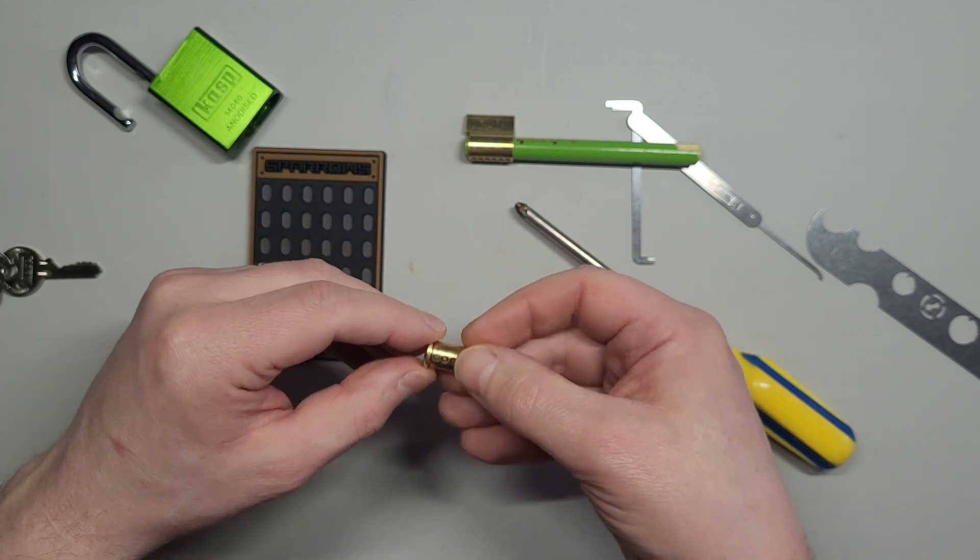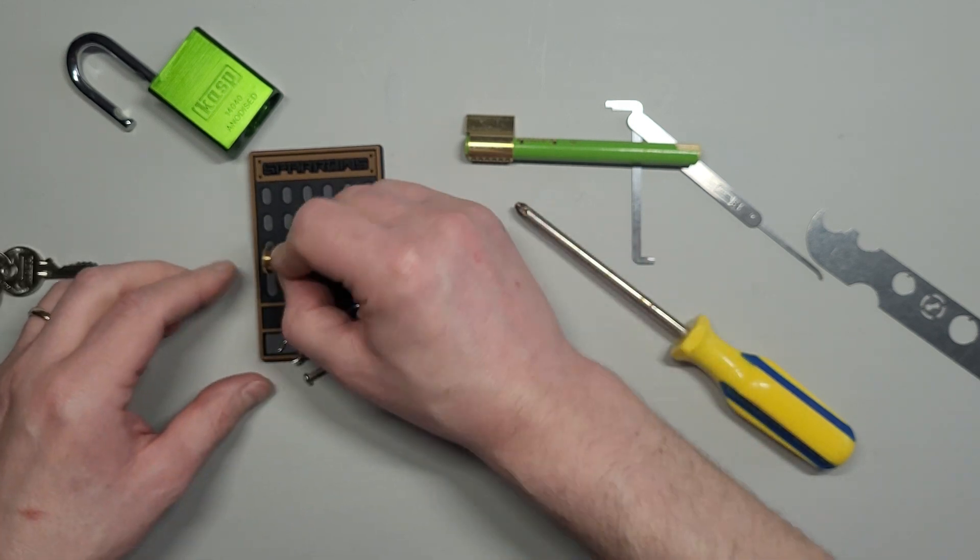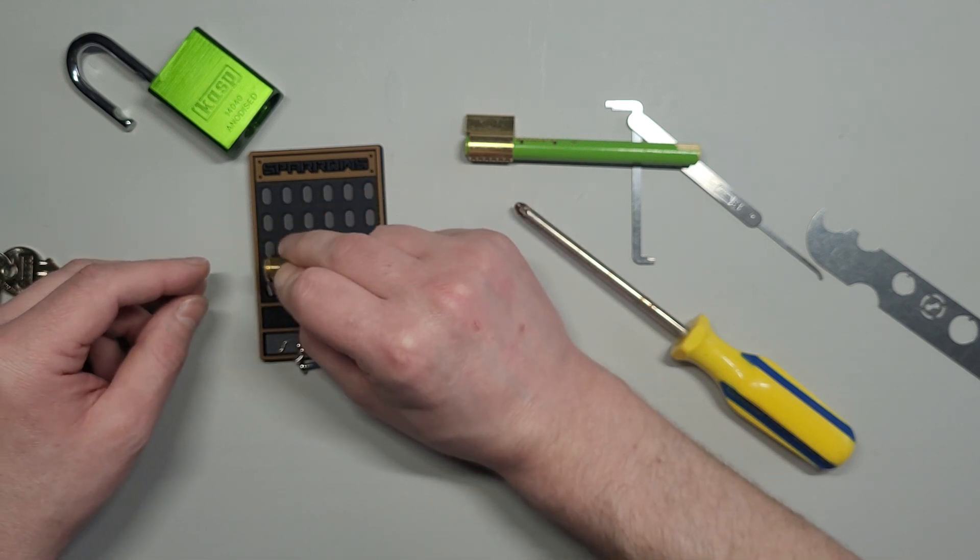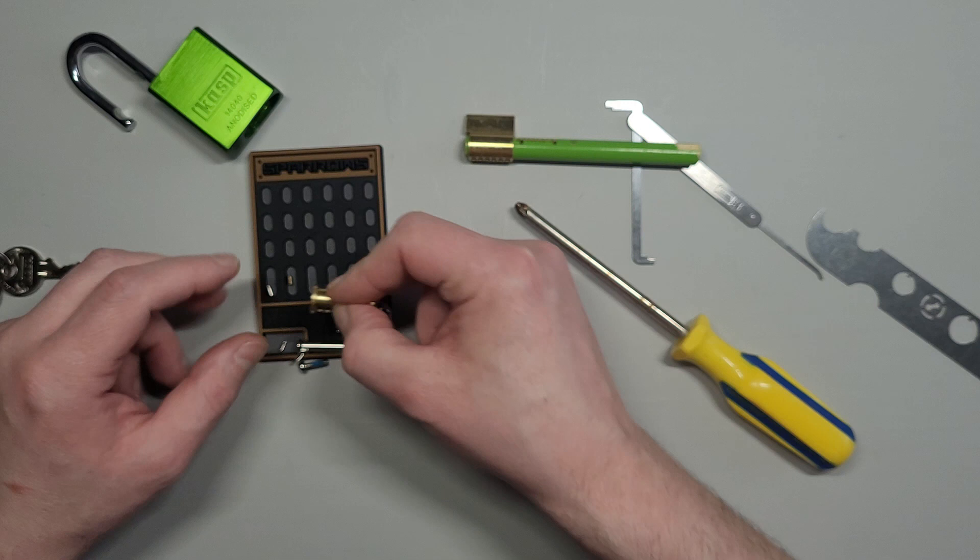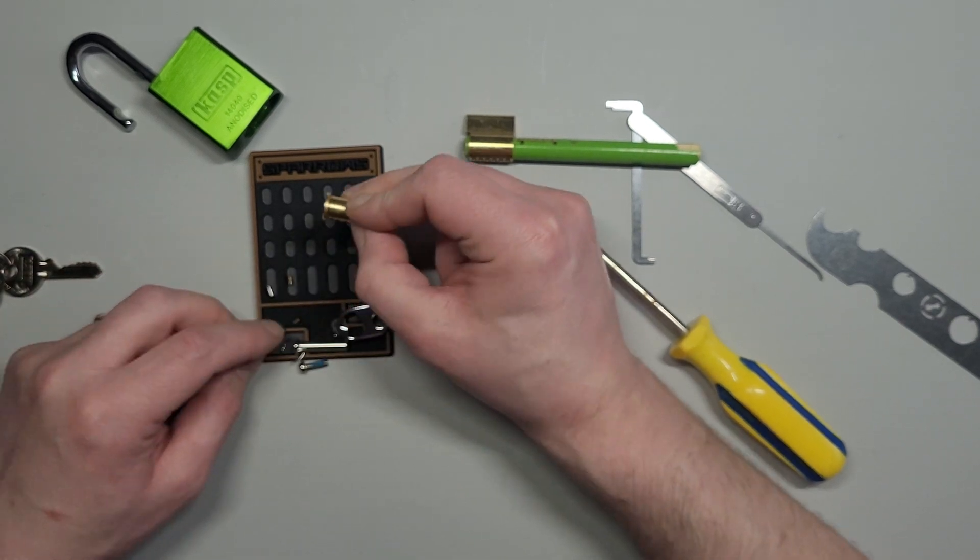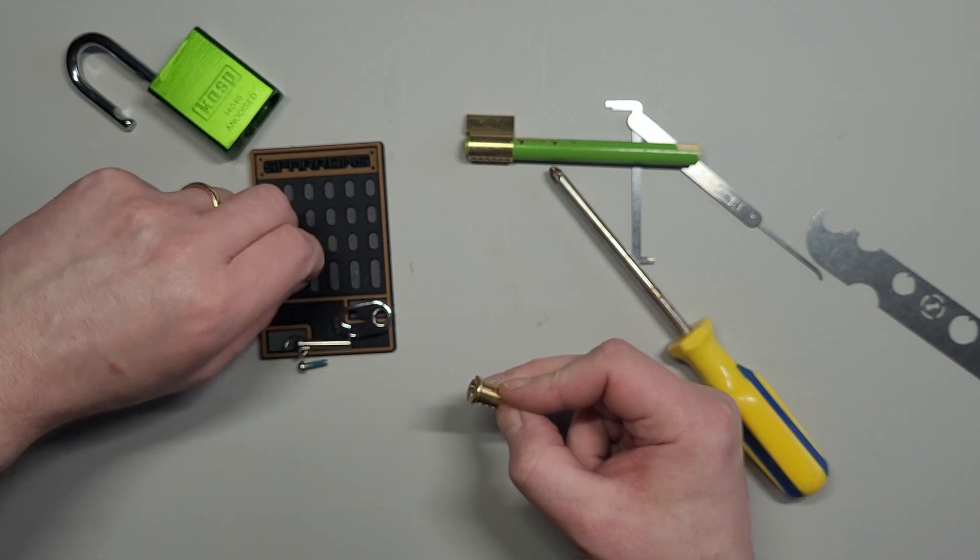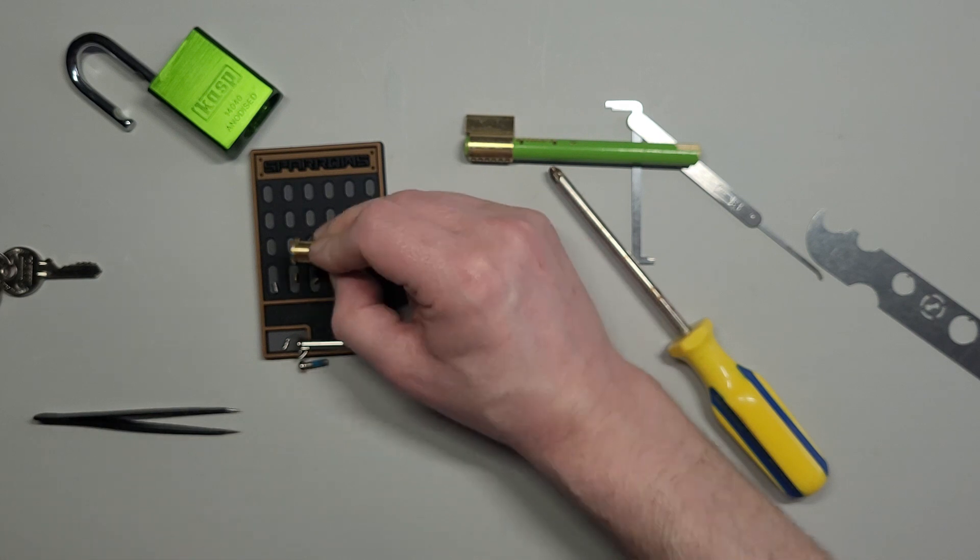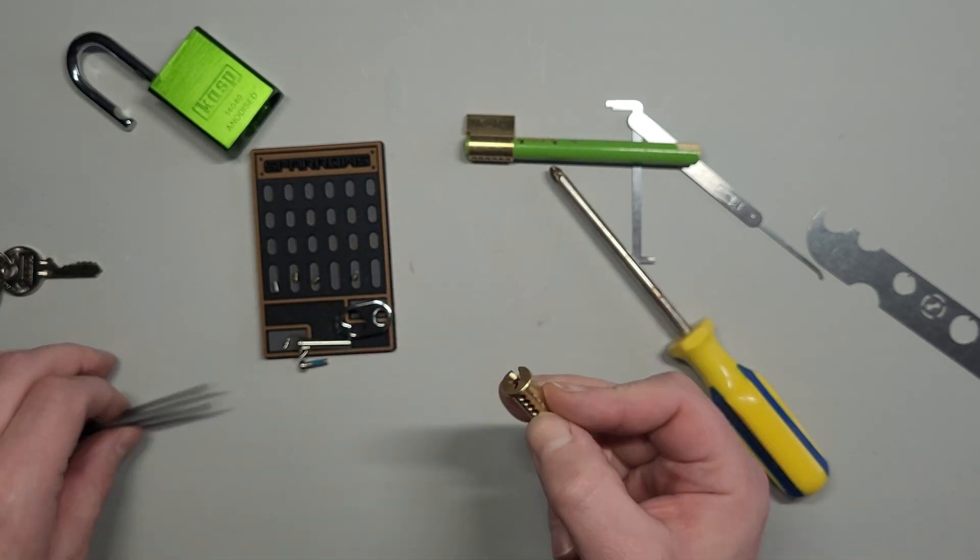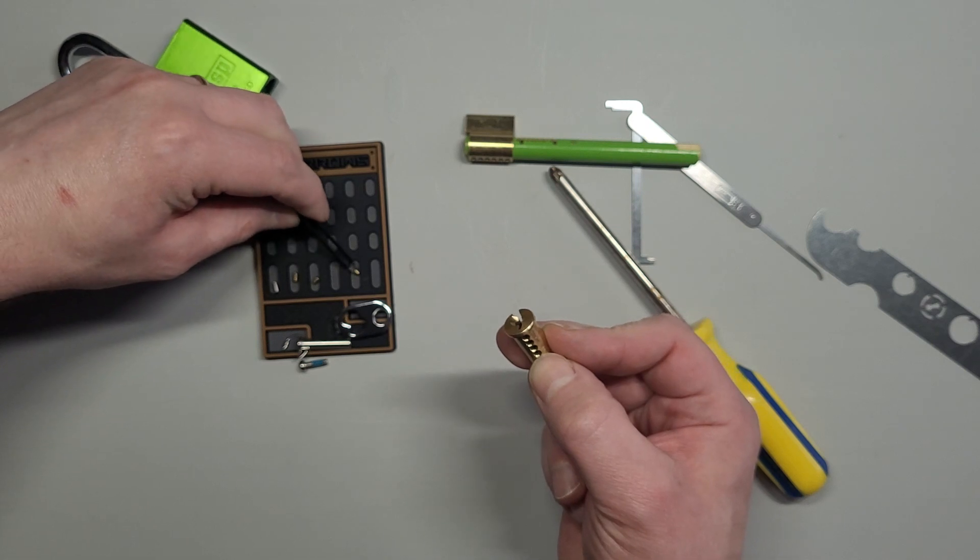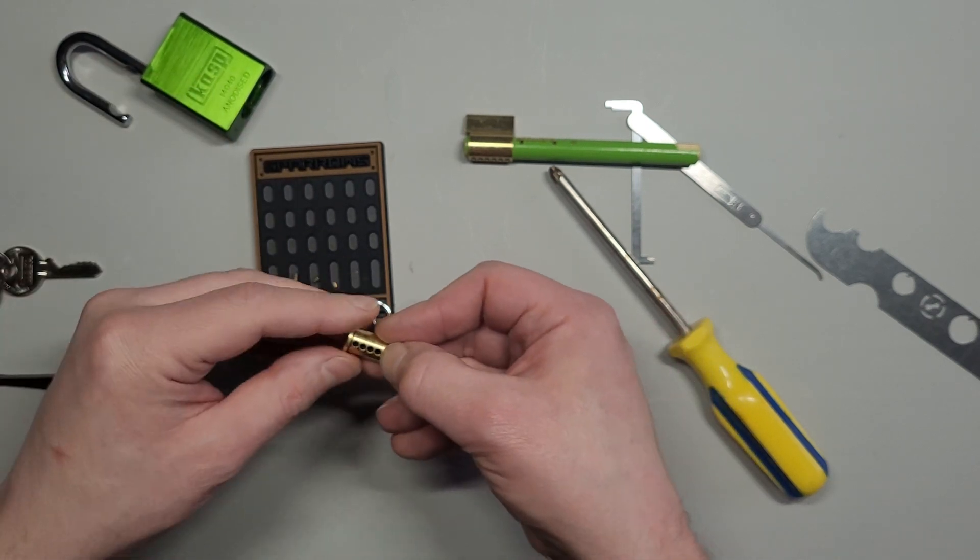Okay, so pin one, pin two. Looks like we've got serrated, serrated. Pin three. I've lost my pinning tweezers as well, so I've got some normal tweezers. Pin four, looks like mainly serrated. And that looks like a small standard pin.